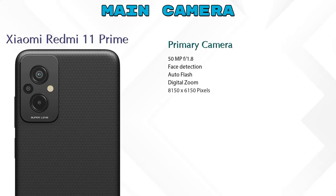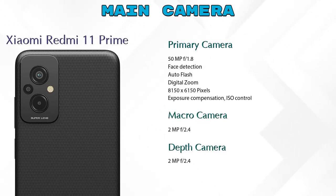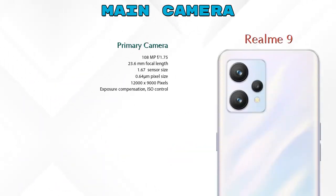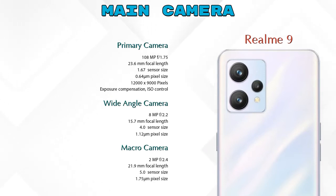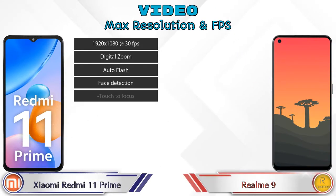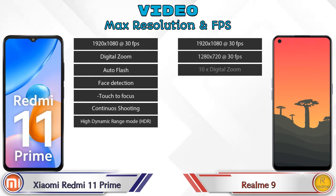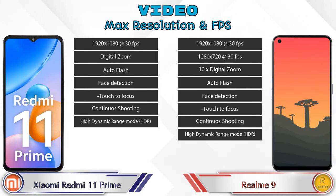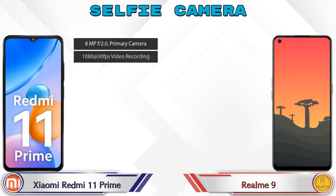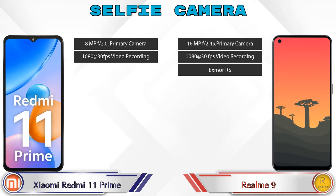Now let's talk about cameras. The Xiaomi Redmi 11 Prime has three rear cameras: a primary camera, a macro camera, and a depth camera. Realme 9 also has three rear cameras: a primary camera, a wide-angle camera, and a macro camera. For video, Xiaomi Redmi 11 Prime has 7 features and Realme 9 has 8. For the front selfie camera, both have a single camera — Redmi 11 Prime with 2 features and Realme 9 with 3 features.